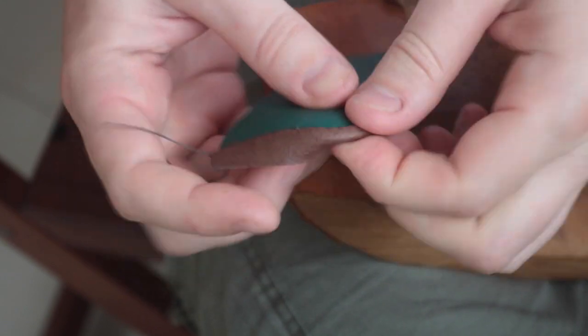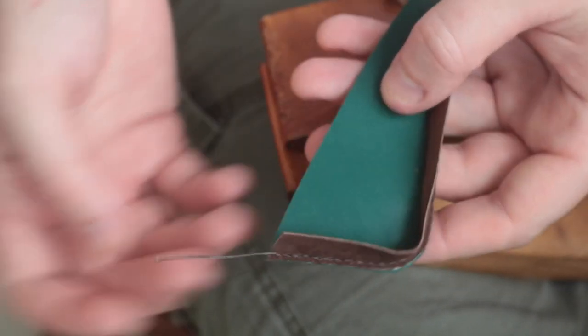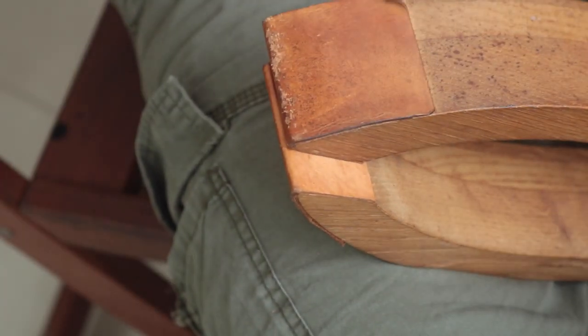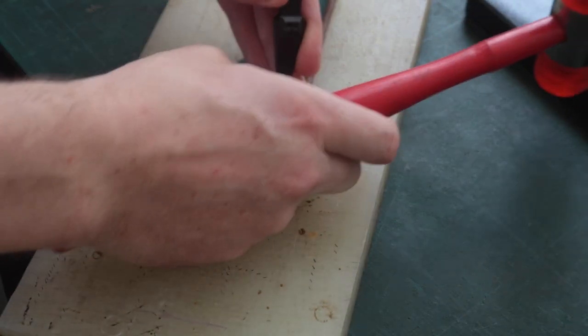The second stitching is going to hold the binding that is folded on the flesh side, and I will do it as close as possible to the binding.